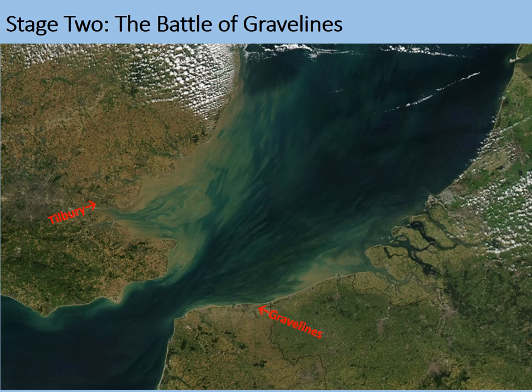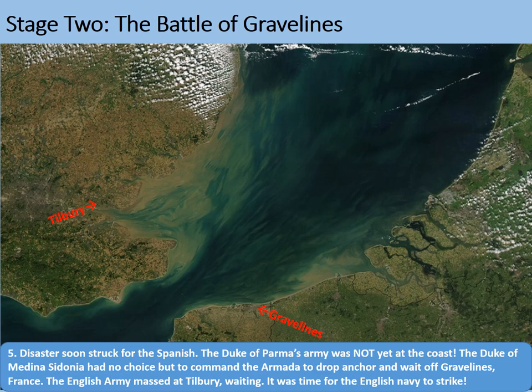Disaster soon struck for the Spanish. The Duke of Parma's army was not yet at the coast — clearly he'd been held up somewhere. The Duke of Medina Sidonia, in charge of the Armada, had no choice but to command the Armada to drop anchor and wait off Gravelines, France. The English army massed at Tilbury, waiting. It was time for the English navy to strike. That English army at Tilbury was simply waiting at the most convenient location for a Spanish army to land, though they were nothing like as big as the Spanish army would be.